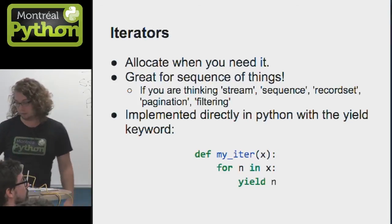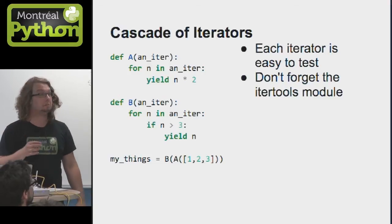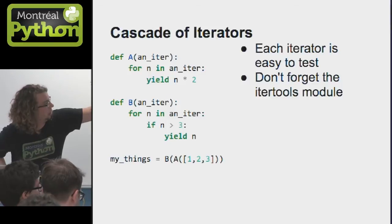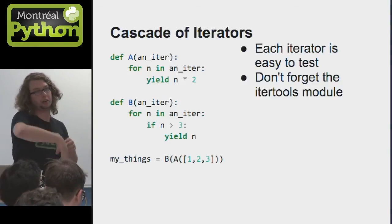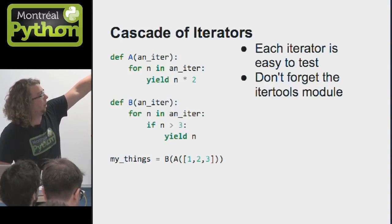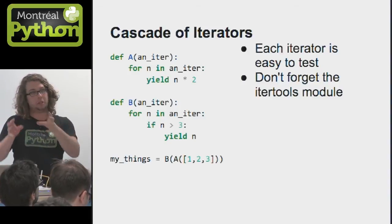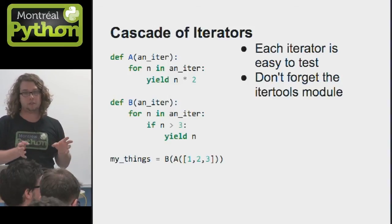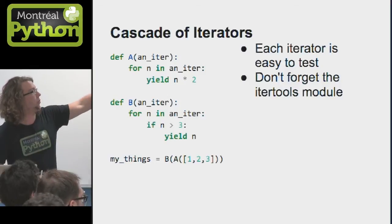One of the cool things with yield is you can also have a cascade of iterators. Think of it a bit like layers of onions where you can put iterators inside of other iterators. And they will be using each one for each piece of data. So in this example, you're going to have one, two, and three, which is a list. The first element is going to be one, it's going to be returned, it's going to be multiplied by two, so you're going to have two.